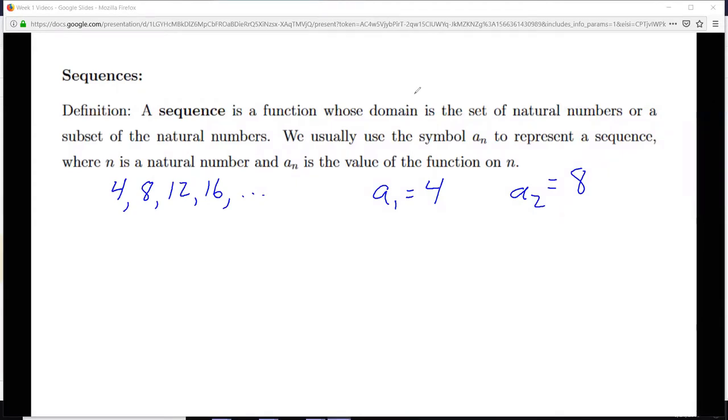Let's take this simple sequence, 4, 8, 12, 16, and so on. A1 is 4, A2 is 8. So if we were going to write a formula for AN, we could write this as AN equals 4N. And we could calculate A1, A2, and so on from this. In function notation, we might write it this way: F of N equals 4N.